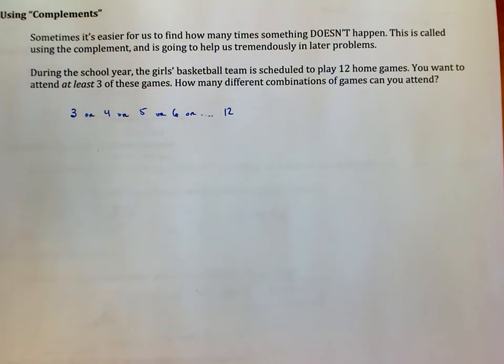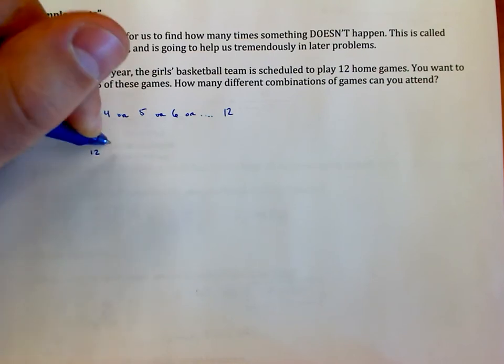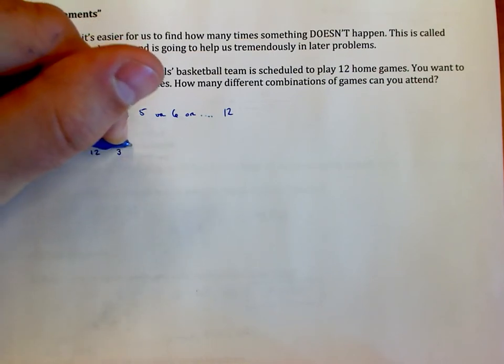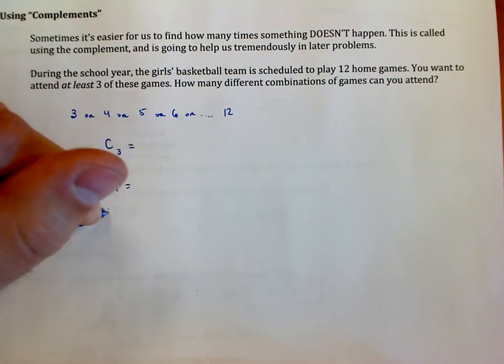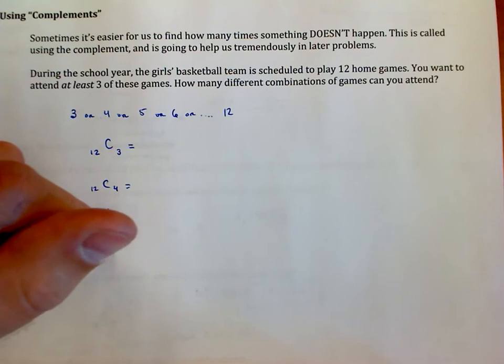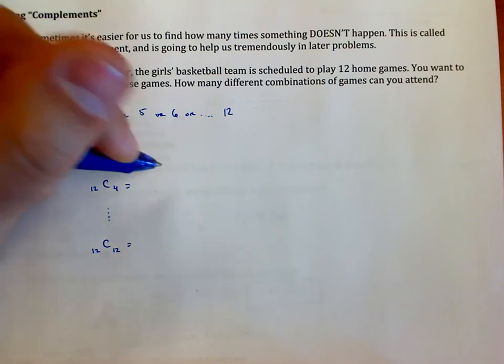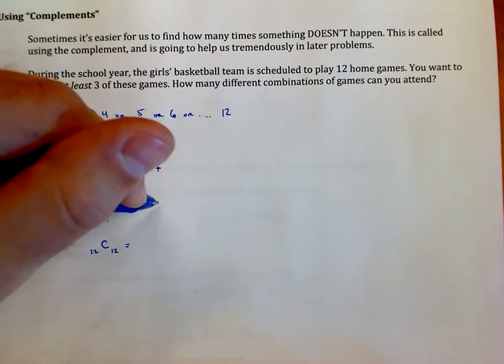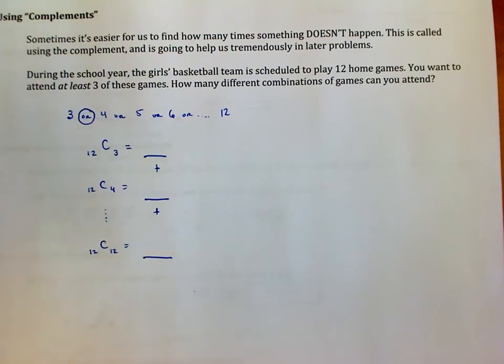So the long way to do this would say okay, I've got 12 games to choose from. I want to find the number of combinations of three of those, and the same thing for four, and all the way down to 12. And then because that's an 'or' statement—I could attend three games or four games or five games—that means I'm going to add all those values together. So I'll take this number and add this number and keep going all the way through 12.